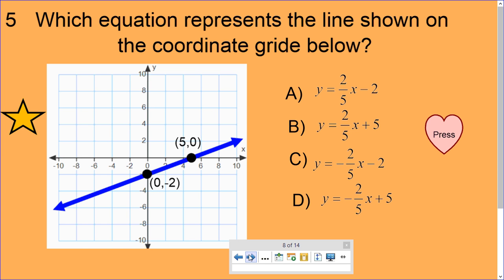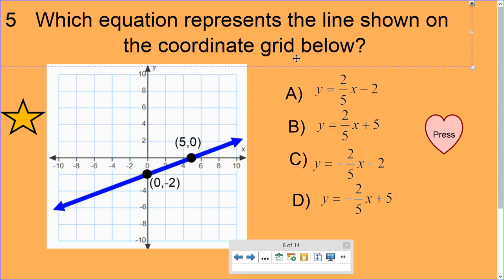Which equation represents the line shown on the coordinate grid below? So we got equations here that we got to choose from. And we got a line with two coordinates on it. I noticed this is on the y-axis. And that's an important point. That means this is the y-intercept. Because if you remember, we have a formula: y equals mx plus b.